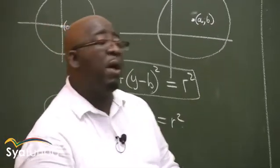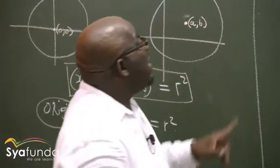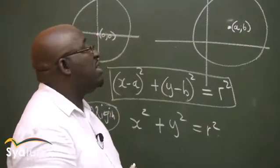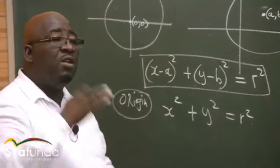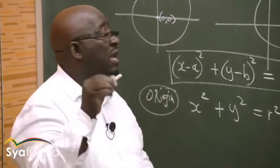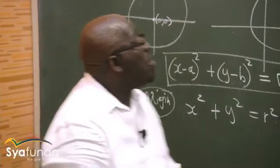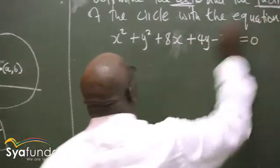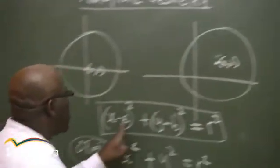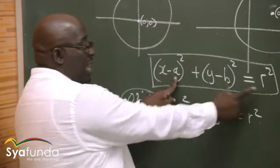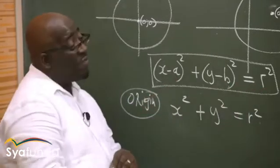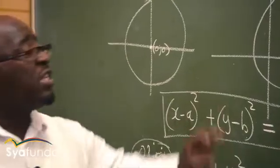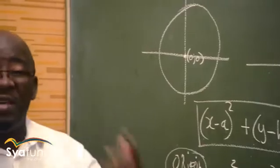Let's look at the examples. This is a typical example: determine the center and the radius. The center is the point (a, b). The radius is the distance from the center of a circle to the circumference. The circumference is the distance around the circle. So we are looking for the center coordinates and the radius, which is the square root of r squared.